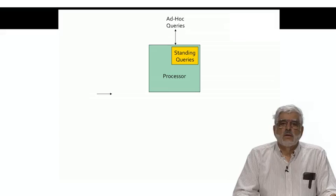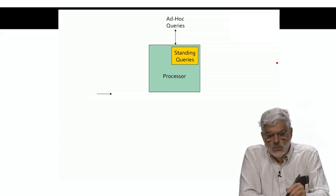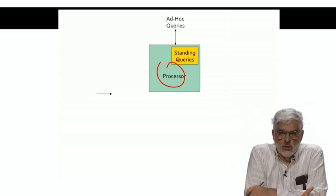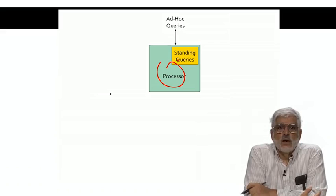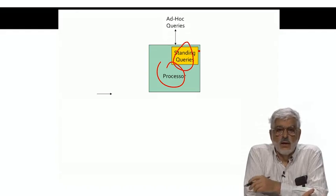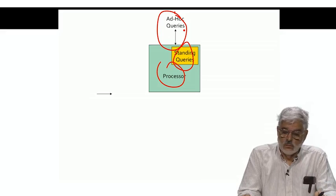So, here is a very simple outline of what a stream management system looks like. First, there's a processor, which is the software that executes the queries. The processor could, of course, be a large number of processors working in concert. The processor may store some standing queries, and also allow ad hoc queries to be issued by the user.